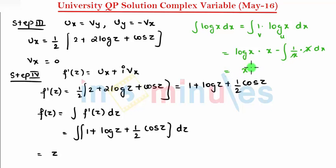This and this cancels, so I get x log x minus integration of 1 as x. So I get this as my integration of log x, which you can write directly.